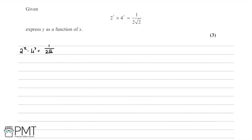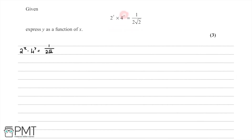In this question we're given that 2 to the power of x multiplied by 4 to the power of y is equal to 1 over 2 root 2. What we're being asked to do is to express y as a function of x. We want to perform some operations on this expression to isolate y and have an expression where y is equal to something that contains an x.